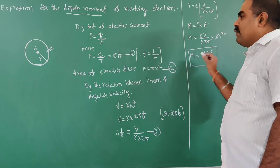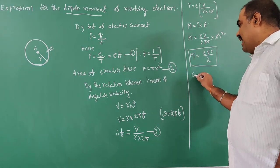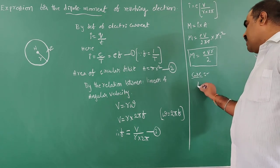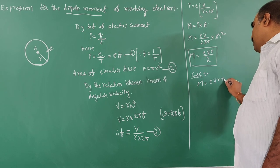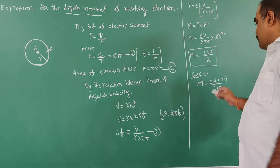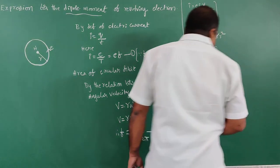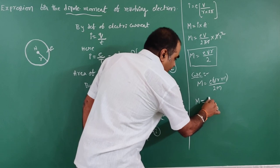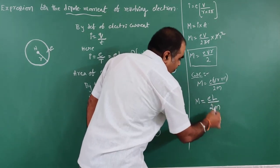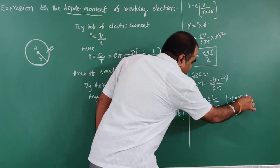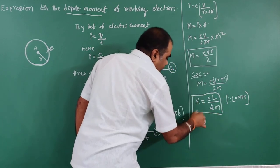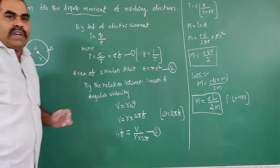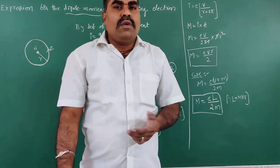This is the main formula. Now multiplying and dividing by small m (mass of electron): M equals eVrm divided by 2m. Here Mvr is nothing but angular momentum, represented by capital L. Therefore M equals eL divided by 2m. This is the expression for the dipole moment of a revolving electron. In the next class we will go to a new topic. Thank you.